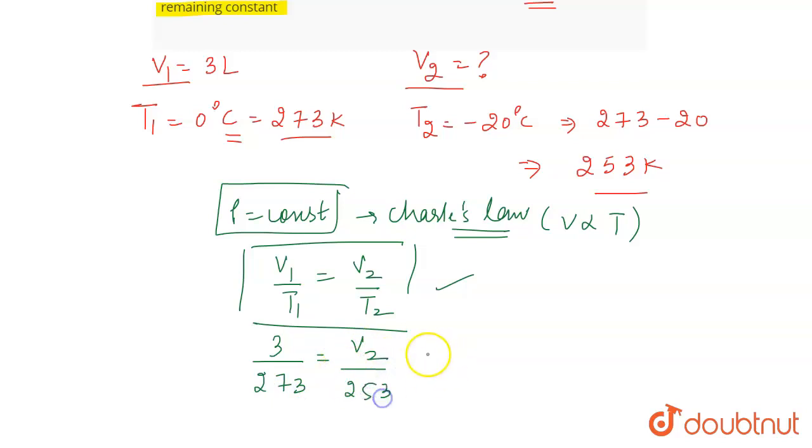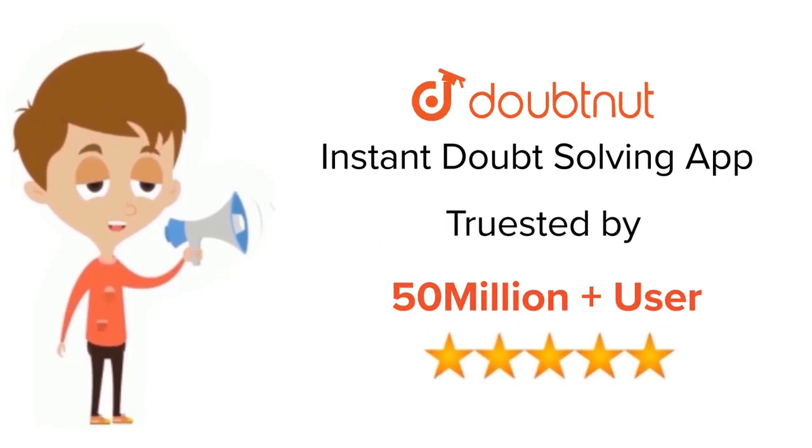So we will be getting V2 is equal to 253 into 3 divided by 273. So V2 will be equal to 2.78 liters. As the unit of volume was given in liters, that is why we are going to report the answer in liters as well. So the correct answer for V2 is going to be 2.78 liters, and that's all for the question.